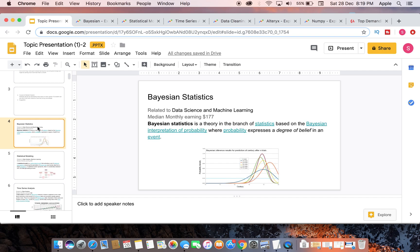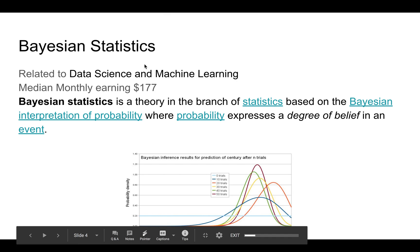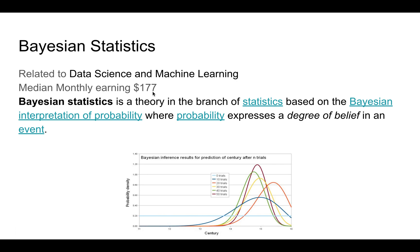The first topic is Bayesian statistics. It is one of the niche topics with not more than 10 courses made on Udemy. It's related to data science and machine learning, and the monthly median earning of a Udemy instructor on this topic is $177. Top earners make around $500–$700 monthly. There is not much competition on this topic. Bayesian statistics is a theory in the branch of statistics based on the Bayesian interpretation of probability, where probability expresses a degree of belief in an event.